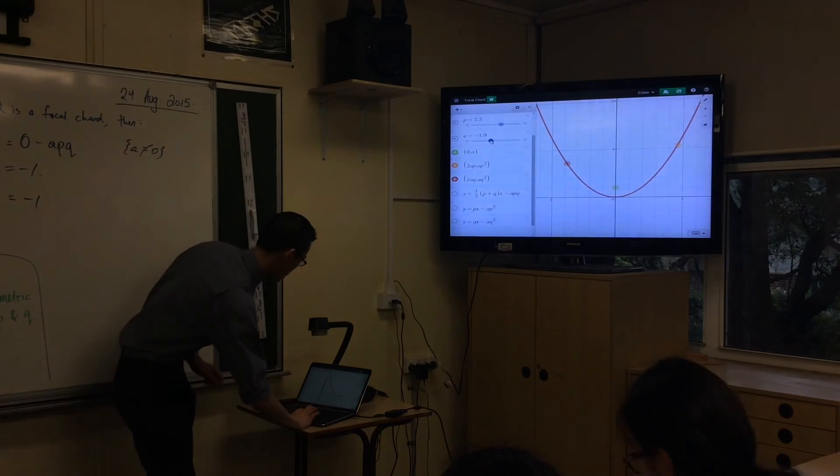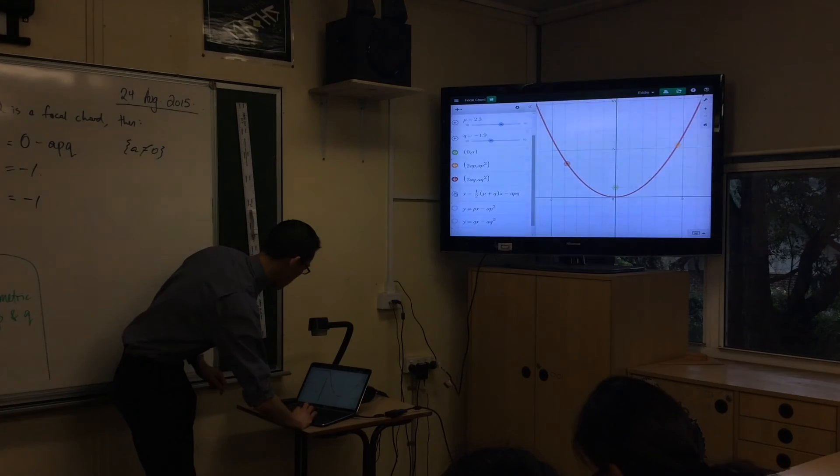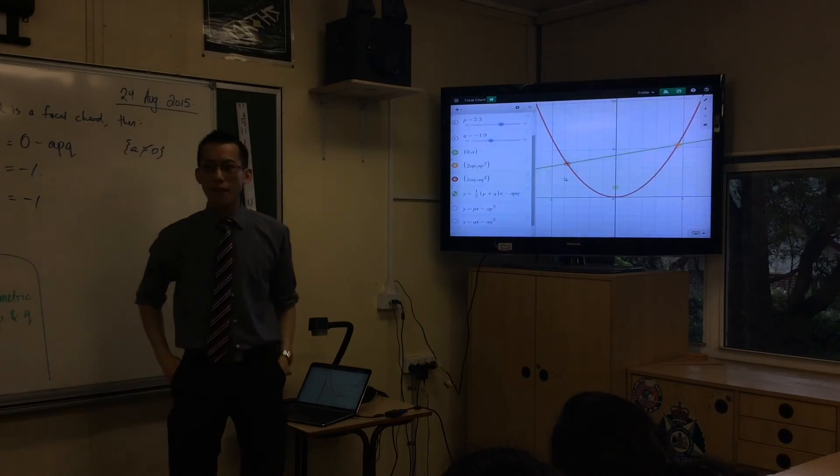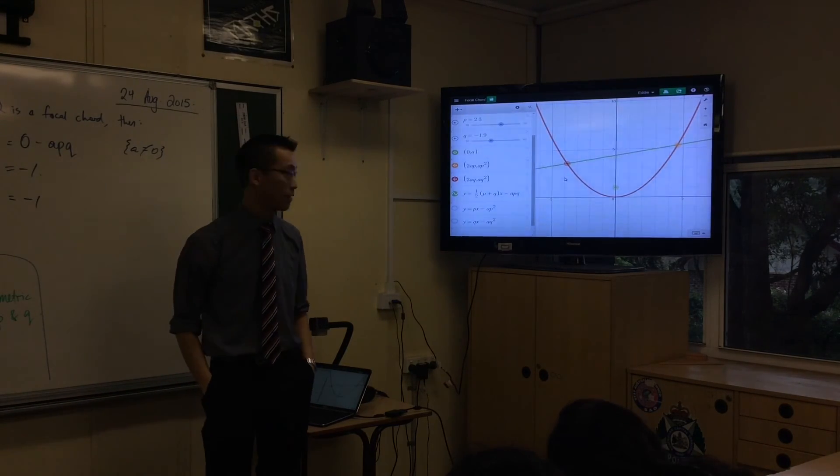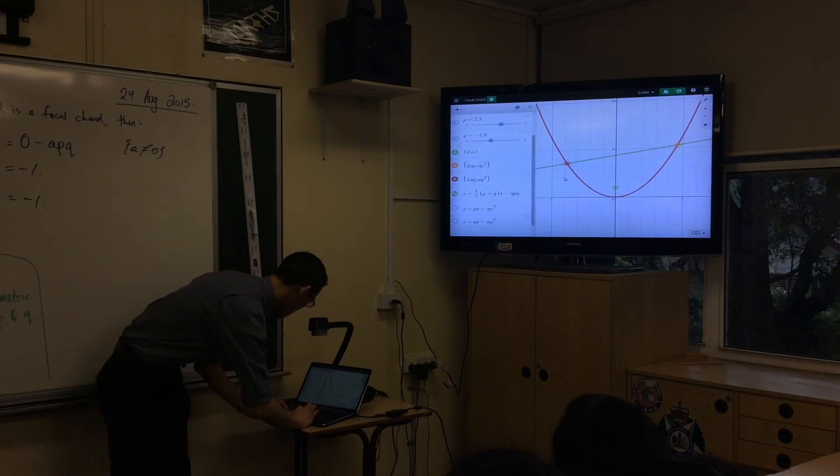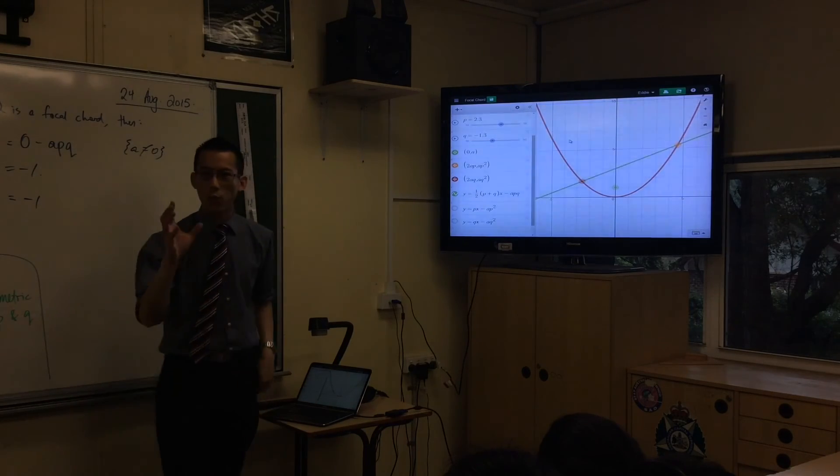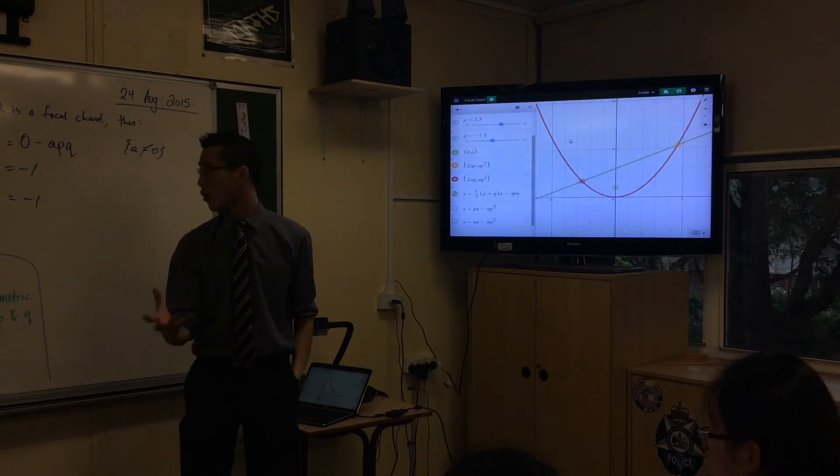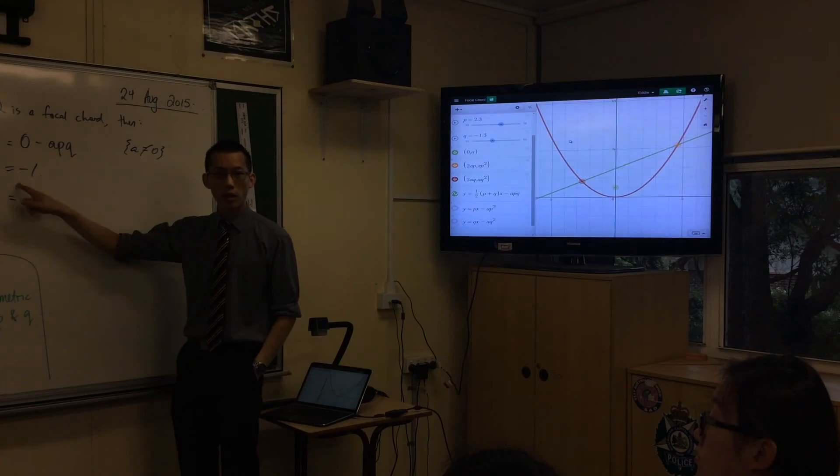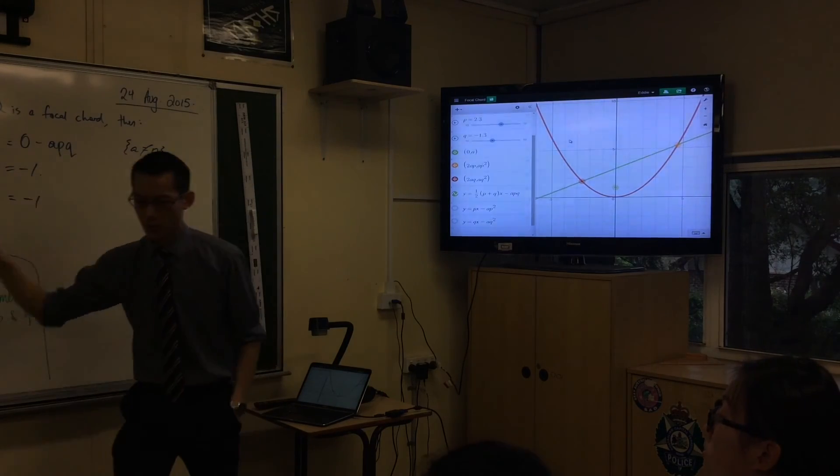So you can recognize down here underneath my coordinates, there's our equation that we've just derived. So there's my focal chord, sorry, there's my chord. It's just any old chord, and I can move p and q any which way I like, and you will see the chord goes and follows it. Now, if I want a focal chord, then this quality must be true.